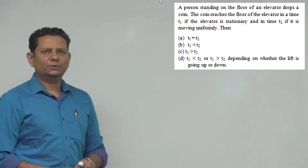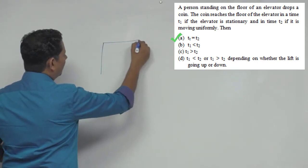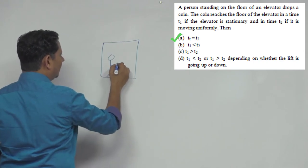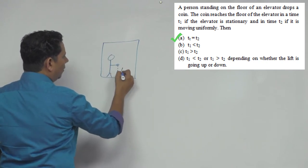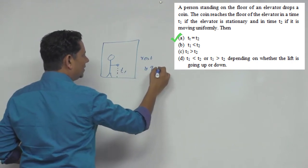Now in this scenario, option A would be the right answer. So if you have a lift where a person is standing like this and they drop a coin from here, the time is T1 when it is at rest, and if it moves with uniform velocity either up or down,